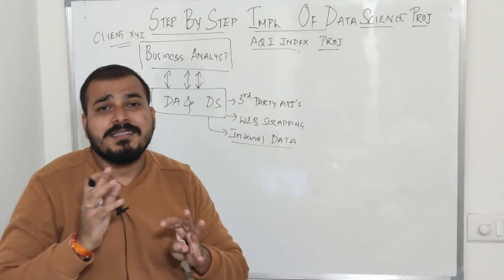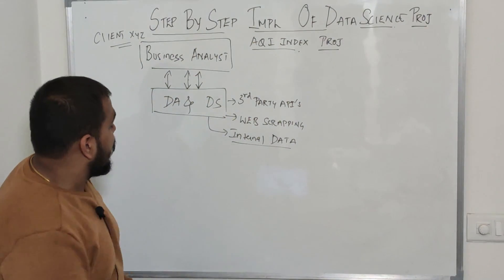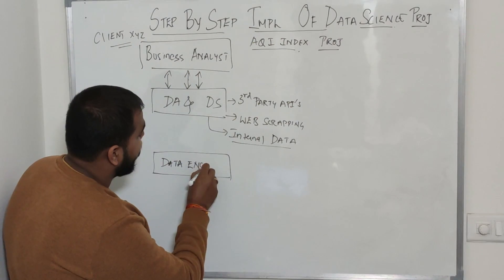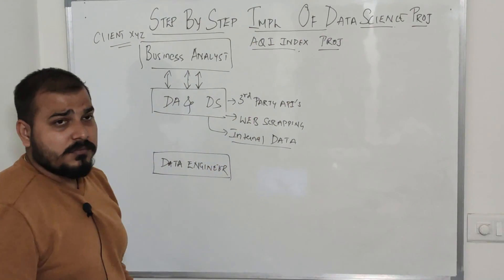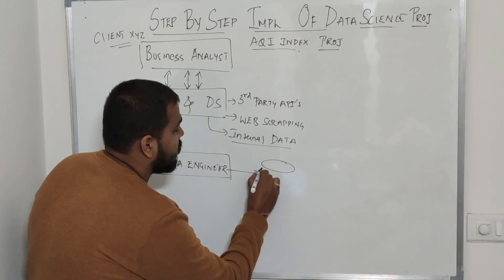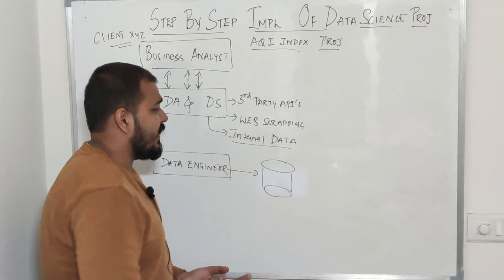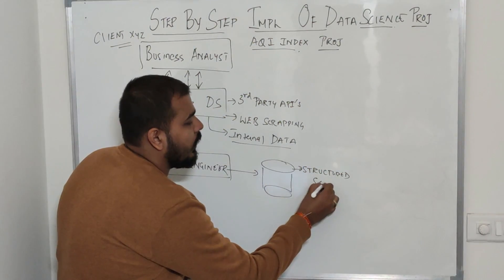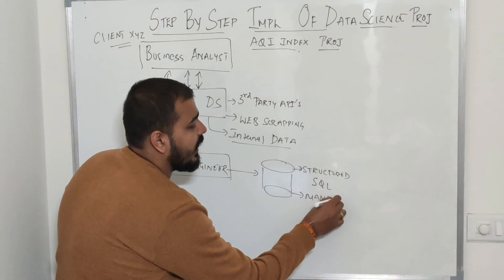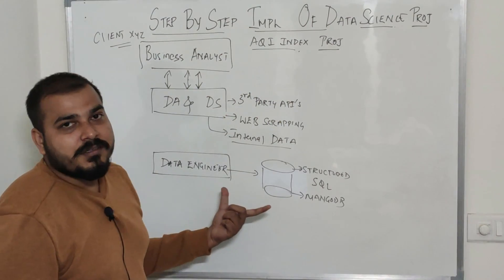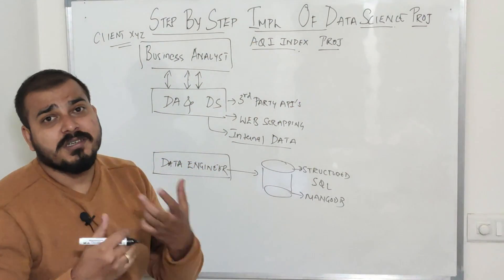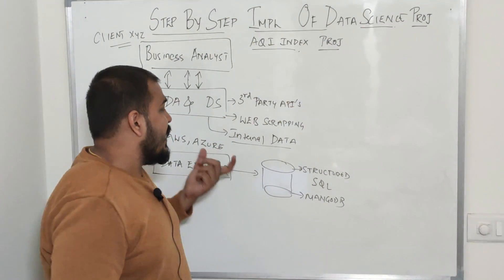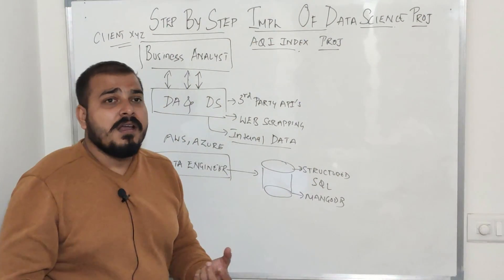Once they decide what data is required, another role comes in: the data engineering team. This team will collect all the data and store it in some database. Depending on the requirement, it may be a structured database like SQL or an unstructured database like MongoDB. The data engineering team may also work with different cloud infrastructures like AWS or Azure to create databases and start collecting the data.